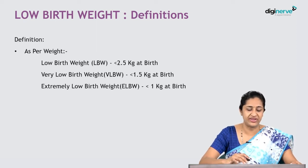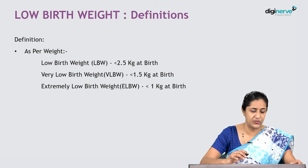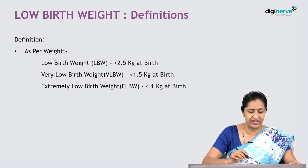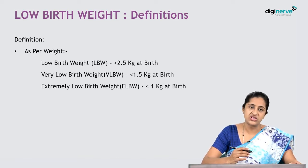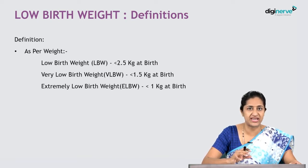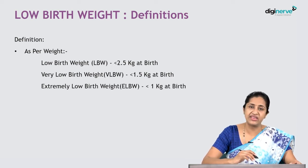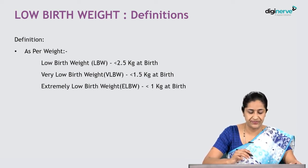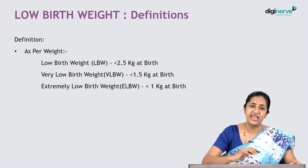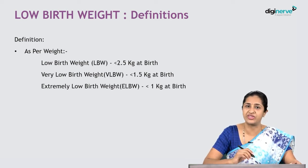The definition of low birth weight was initially based on weight at delivery. If the infant weighed less than 2.5 kg, it was classified as low birth weight. A group with different mortality and morbidity statistics emerged — those below 1.5 kg were grouped as very low birth weight. A further group, those below 1 kg at birth, were classified as extremely low birth weight neonates.